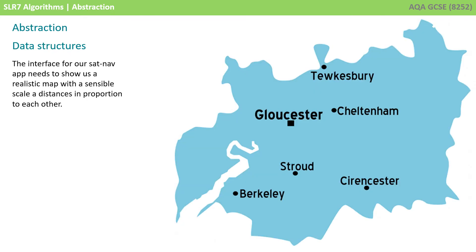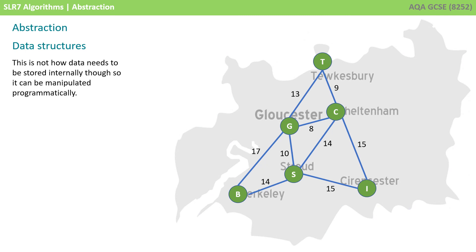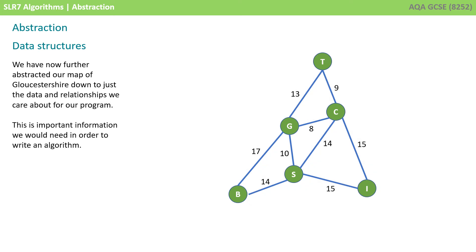When we write the software for the satellite navigation device, we need to think about how we're going to store and manipulate the data in the programming language. The map that was useful to the user isn't useful when we're actually creating the algorithms behind the scenes. As long as we can represent which roads are connected to which roads, and how many miles they are, then we don't actually need to see the map at all. So the data we're left with is abstracted, and we can now store this in an appropriate data structure for our algorithm to manipulate.